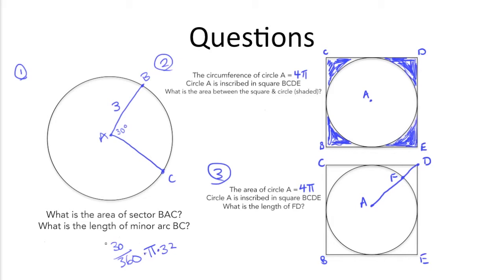So all we need to do is simplify this out to get the answer. So 30 over 360 simplifies to 1 over 12 times 3 squared, which is 9, times pi. So we get 9 pi divided by 12, which simplifies down to 3 pi over 4.